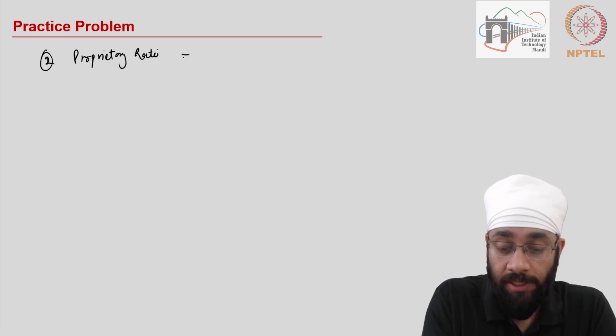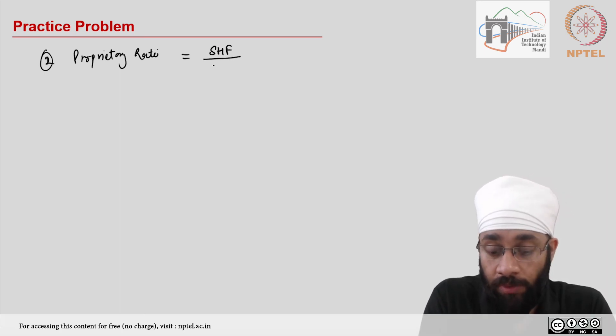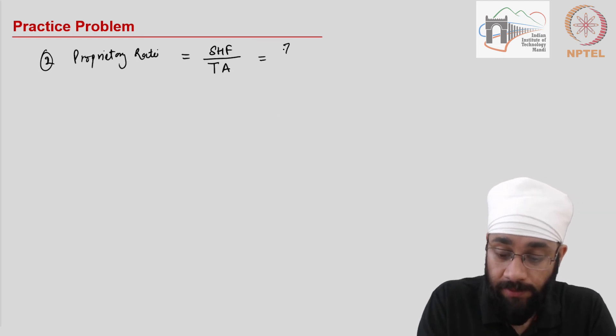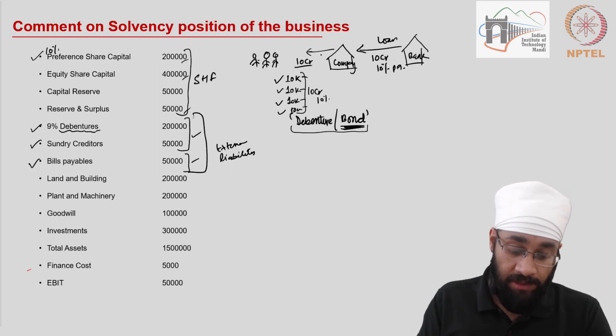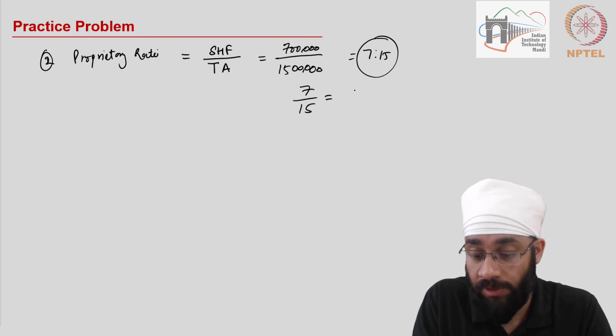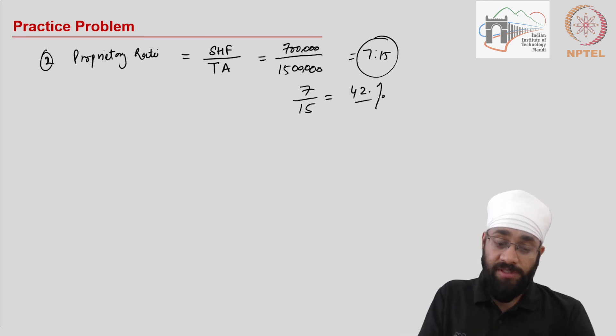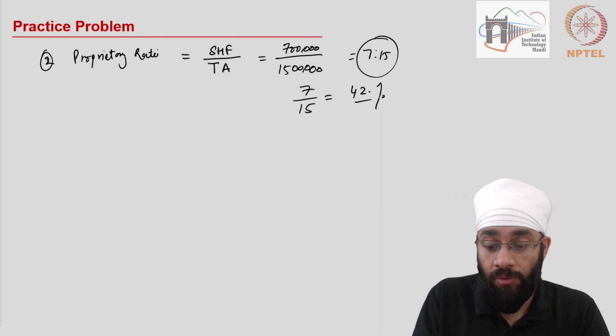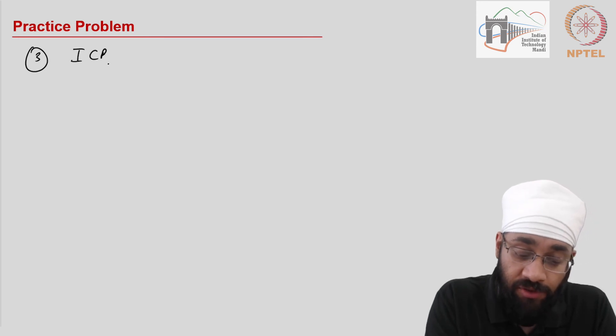Proprietary ratio simply tells us the shareholders funds contribution to the total assets of the business. We have both these numbers: shareholders funds are 700,000 and total assets are 15 lakh. So 7 is to 15—if we do the calculations, 7 by 15 will come out to be about 42%. So 42% is the contribution of the shareholders in the total assets of the business. The remaining portion is contributed by somebody else.